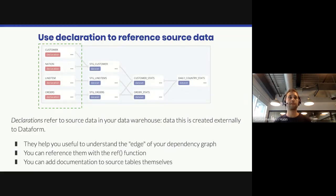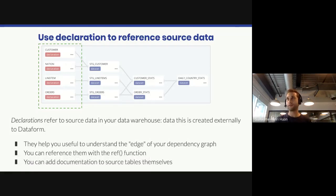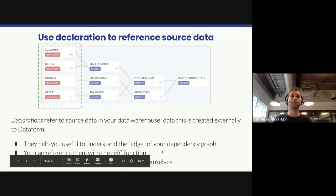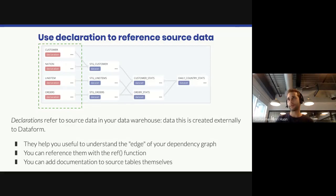Using declarations has many advantages. They help you understand the edge of your dependency graph — when you look at your dependency tree, you know exactly what your analytics stack depends on. They enable you to use the ref function against declarations, so if a source table changes, you only need to change the declarations file and nothing else. And lastly, they enable you to add documentation to your source tables.